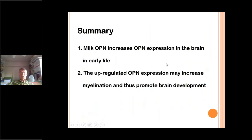To summarize the brain findings: milk osteopontin increases osteopontin expression in the brain in early life, and the upregulated osteopontin expression may increase myelination and promote brain development.